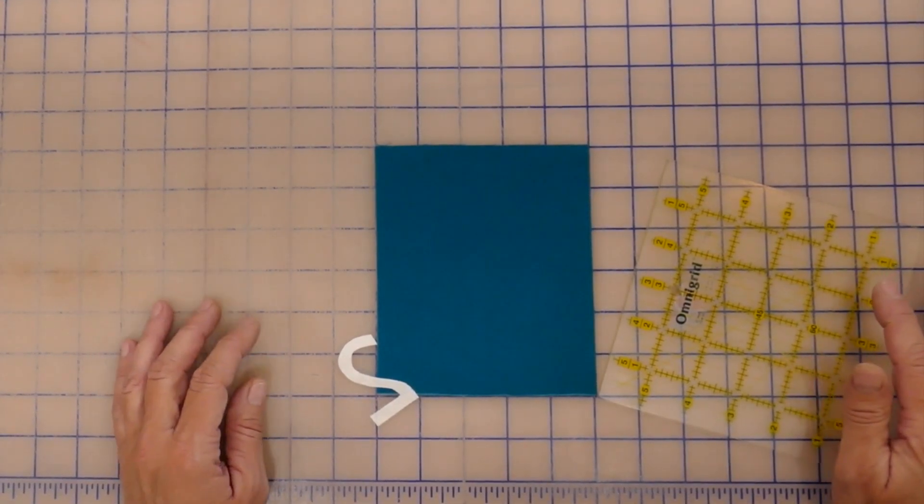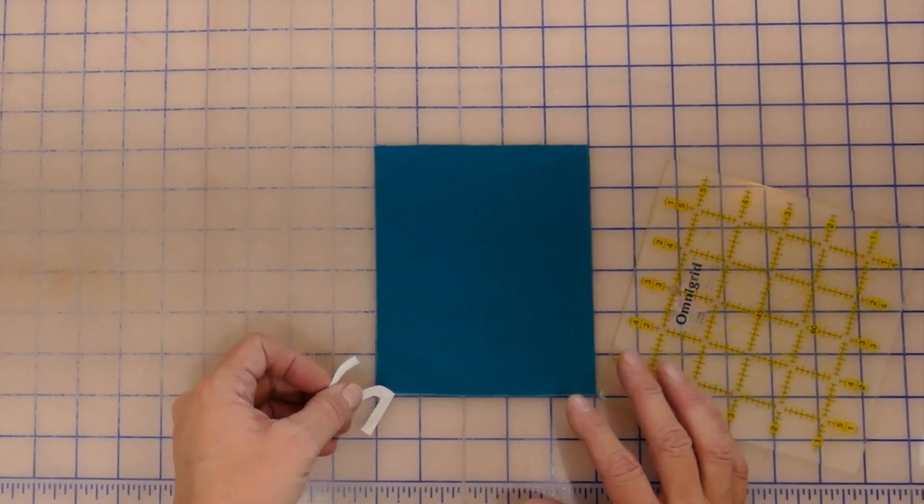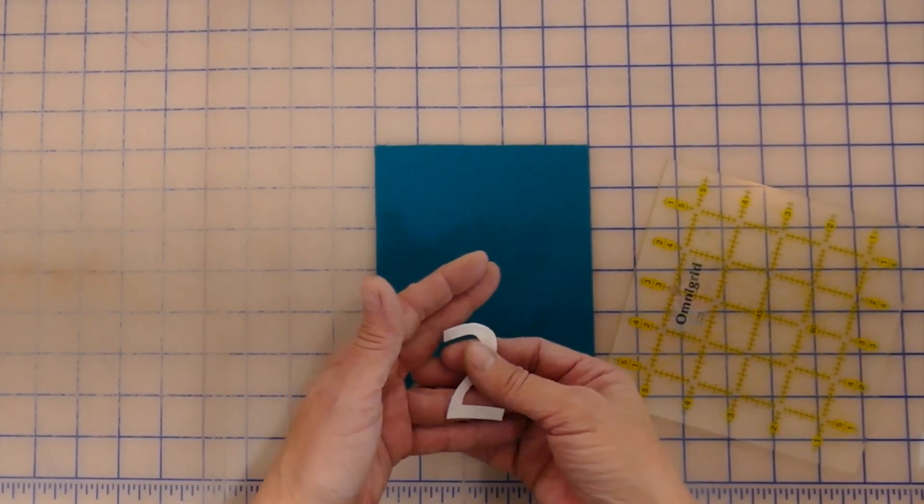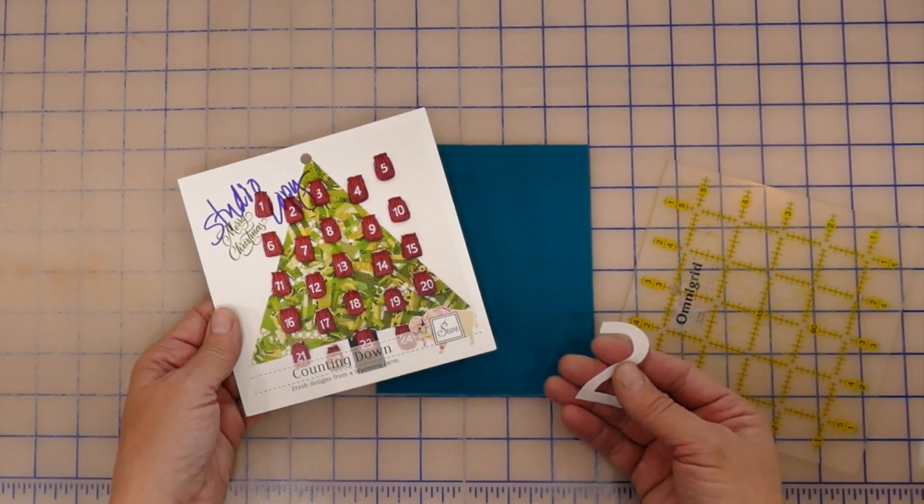Hello and welcome to the studio. Today I want to talk to you about appliquéing the numbers onto the little advent bags, which is called counting down, part of the drawstring bag of the month club.